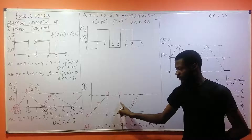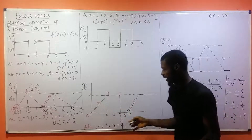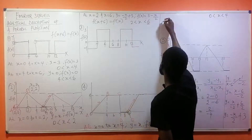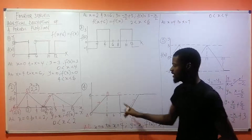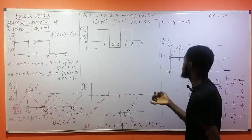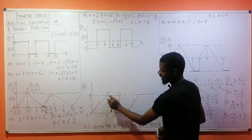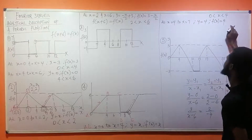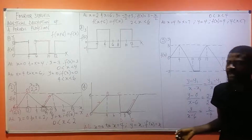For B to C: the values of x go from four to seven. Within that range, y remained constant at four. So y = 4, meaning f(x) = 4, and this happened at 4 < x < 7.